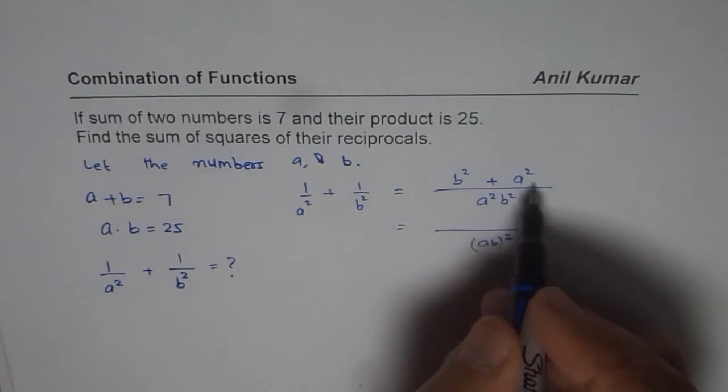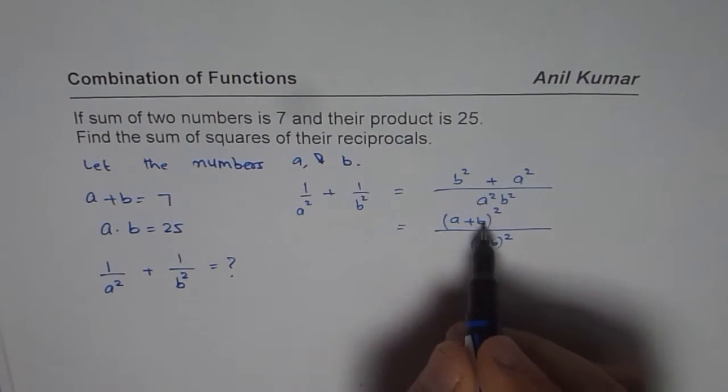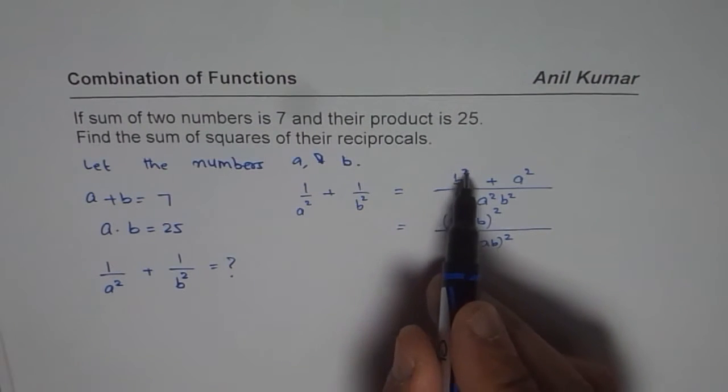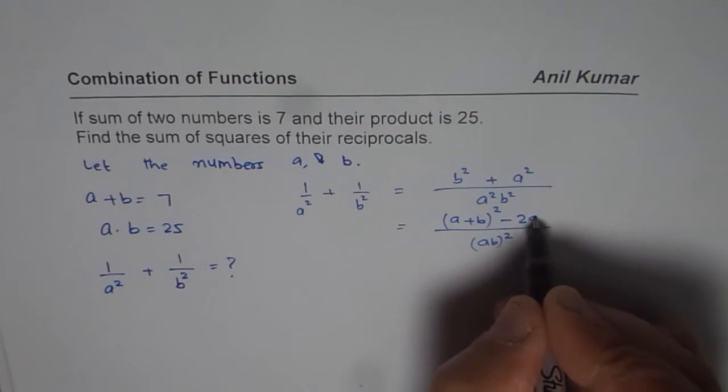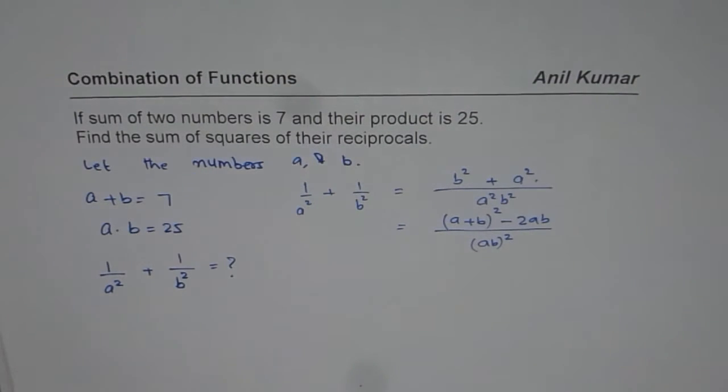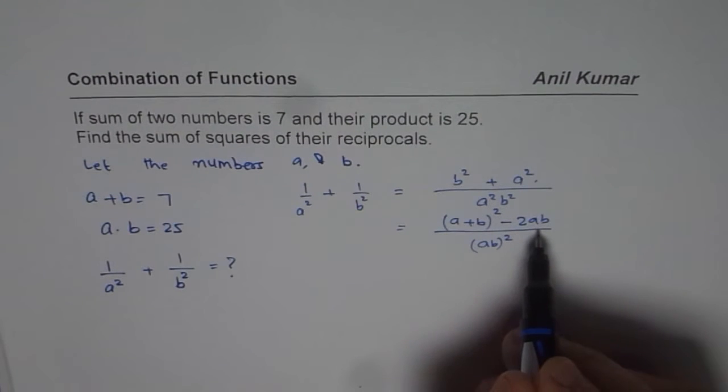I can write this as A plus B whole squared. Now A plus B whole squared is A squared plus 2AB plus B squared. We need only A squared plus B squared, so if I do minus 2AB, then I get exactly what it was. This is a very simple technique but very critical to understand.